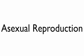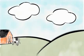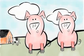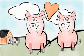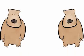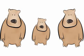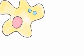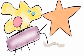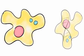Asexual Reproduction. When an organism reproduces, it makes another of the same species. Some organisms reproduce sexually — cows make more cows and pigs make more pigs. Sexual reproduction combines genes from a mother and a father, making a genetically unique organism. Other organisms reproduce asexually. In asexual reproduction, all of the genes come from a single parent, and asexually produced offspring are genetically identical to the parent.